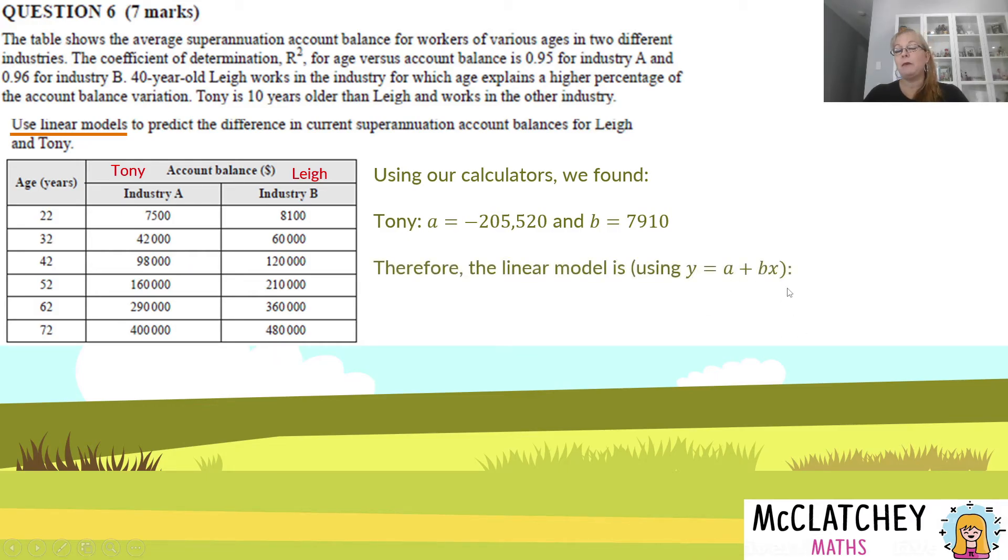We're now going to make that into an equation. Our model is y equals a plus bx. After 2025, the QCAA formula sheet is reverting to y equals mx plus c, so m being your gradient is equal to b and c being your y intercept is equal to a. If you're watching this after 2025 and seeing these a's and b's and don't know what's going on, I will create a video to explain that further. It's just different letters for the same things. We've got this equation here: y = -205,520 + 7,910x. This is Tony's equation and we get our second mark for getting Tony's equation for industry A correct.